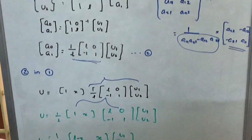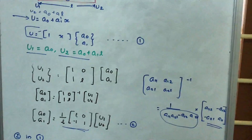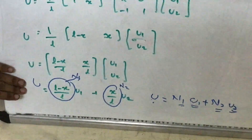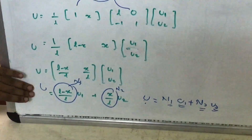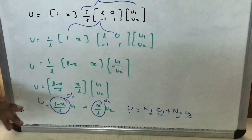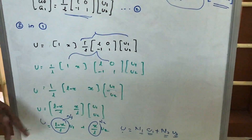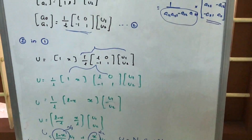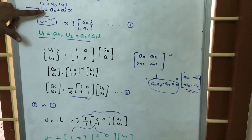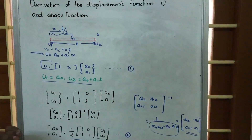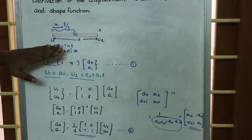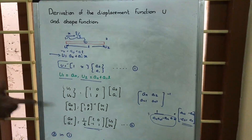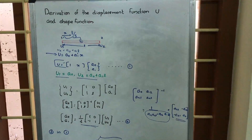So by this derivation, we have obtained two things. First, by this equation we are able to obtain the displacement at any intermediate point between the two nodes 1 and 2. Second, we are able to obtain the shape functions N1 and N2. By simply considering an arbitrary equation u = a0 + a1*x and applying the boundary conditions, we are able to derive the displacement function and shape functions.